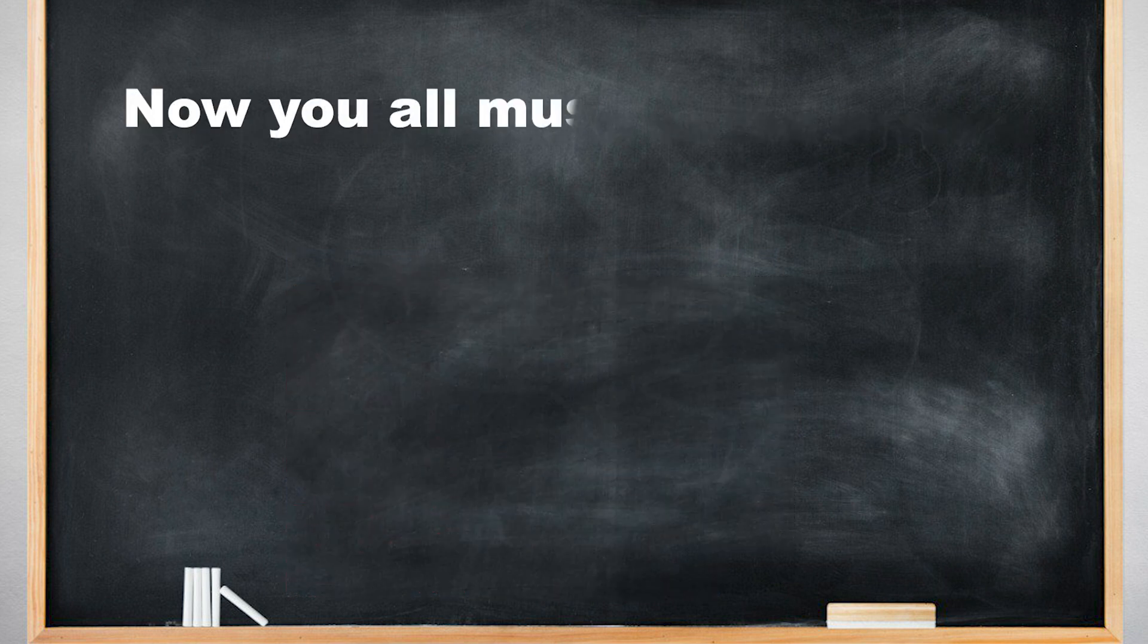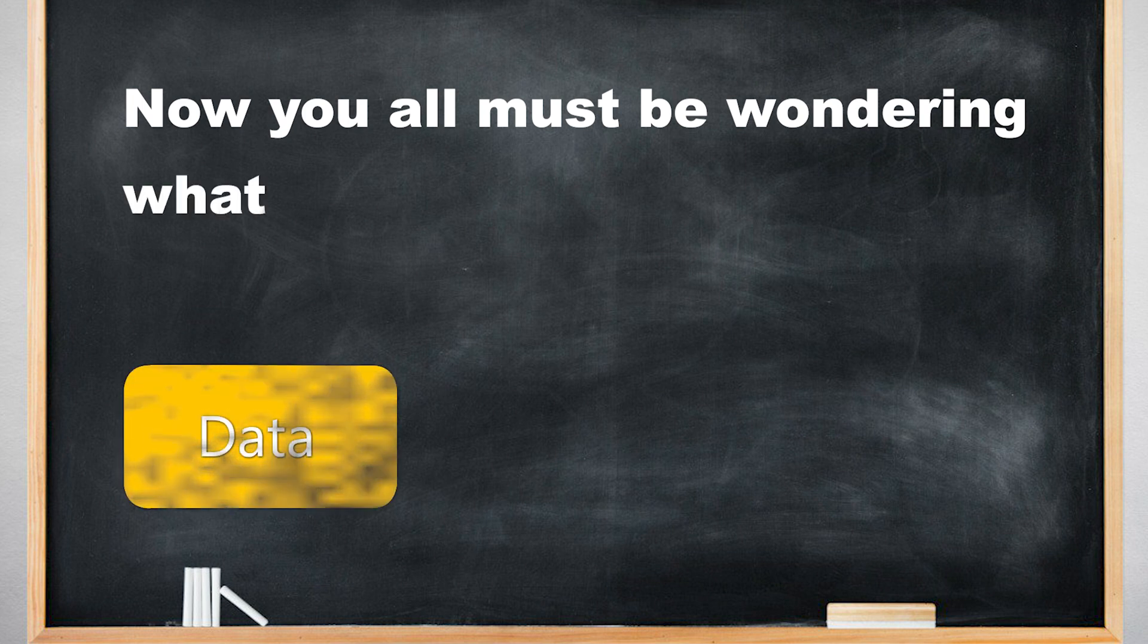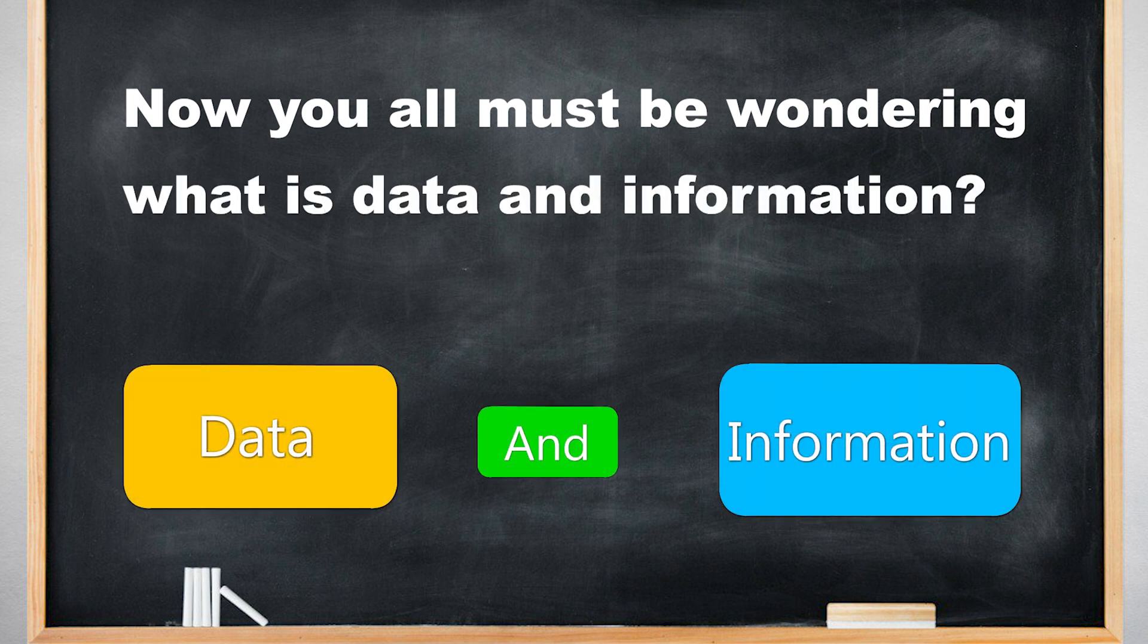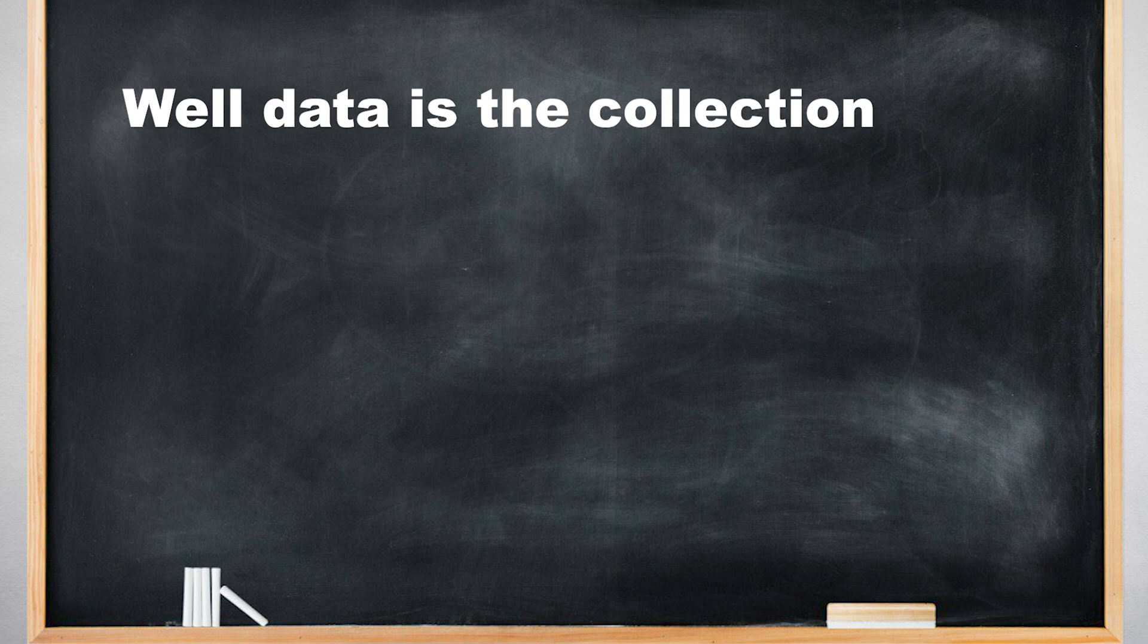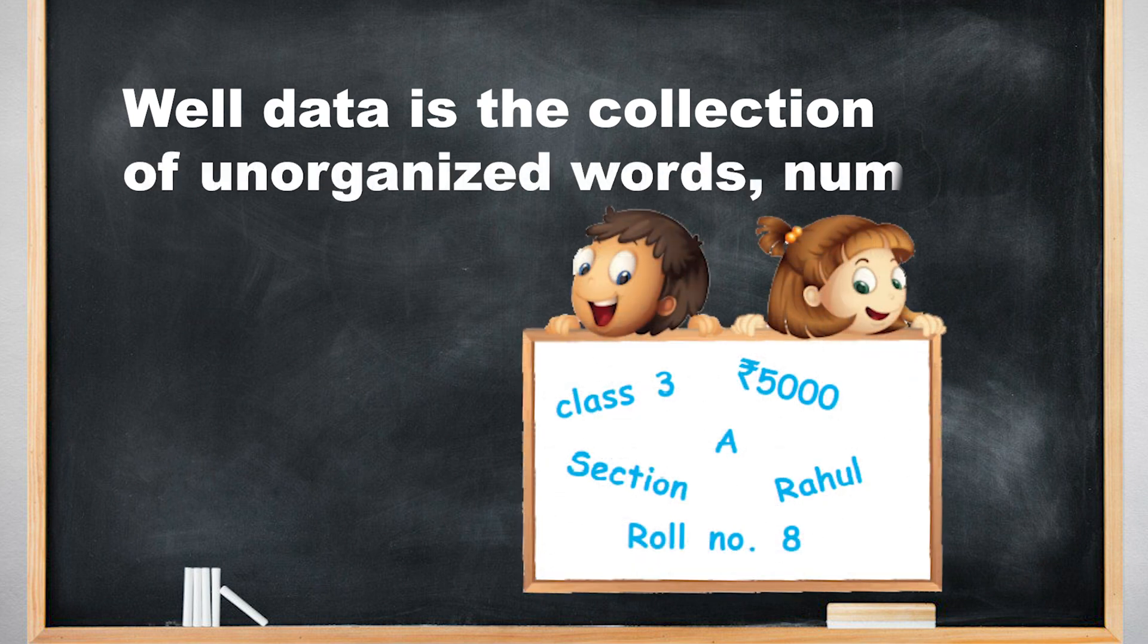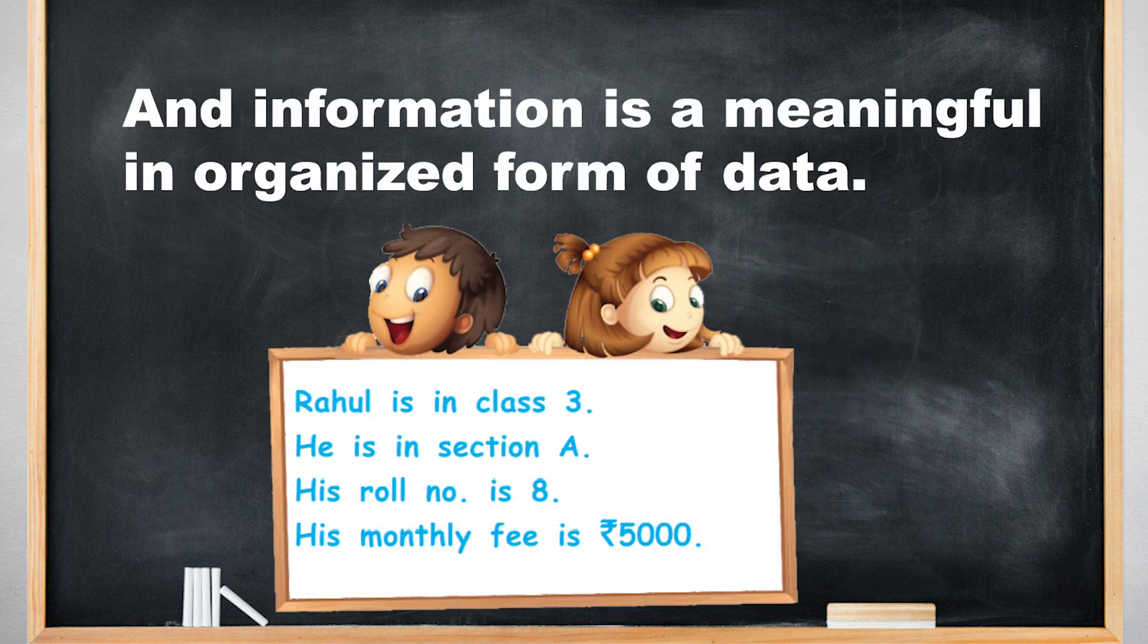Now you all must be wondering what is data and information. Well, data is the collection of unorganized words, numbers, and images. And information is the meaningful and organized form of data.